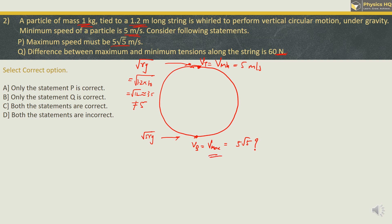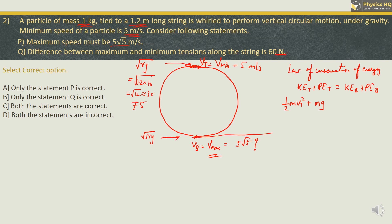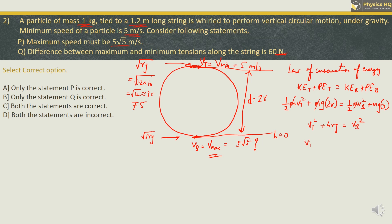We will find the velocity at the bottom by the law of conservation of energy, which says the sum of kinetic energy and potential energy at the top equals kinetic energy and potential energy at the bottom. Kinetic energy at the top is half mVt squared; potential energy at the top is mg into height, which is the diameter 2R. At the bottom, kinetic energy is half mVb squared and potential energy is zero. Cancelling m and multiplying by 2 everywhere, we get Vt squared plus 4Rg equals Vb squared.